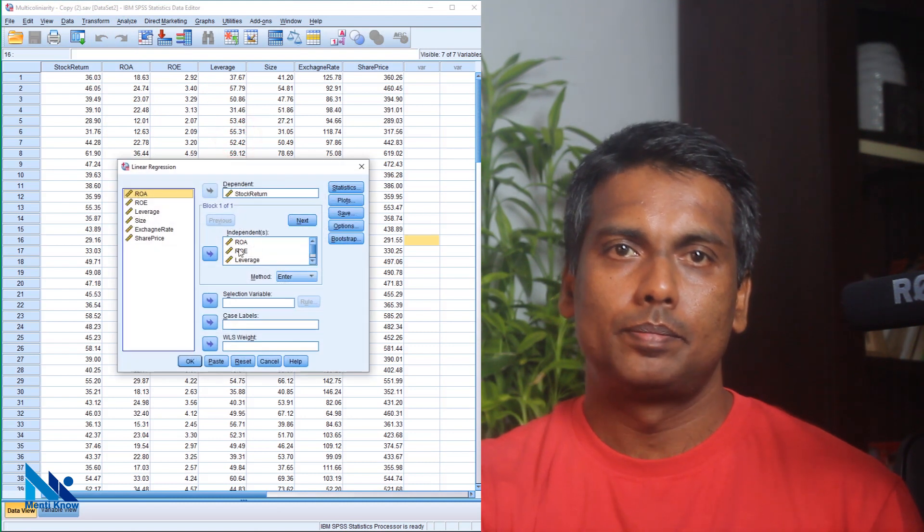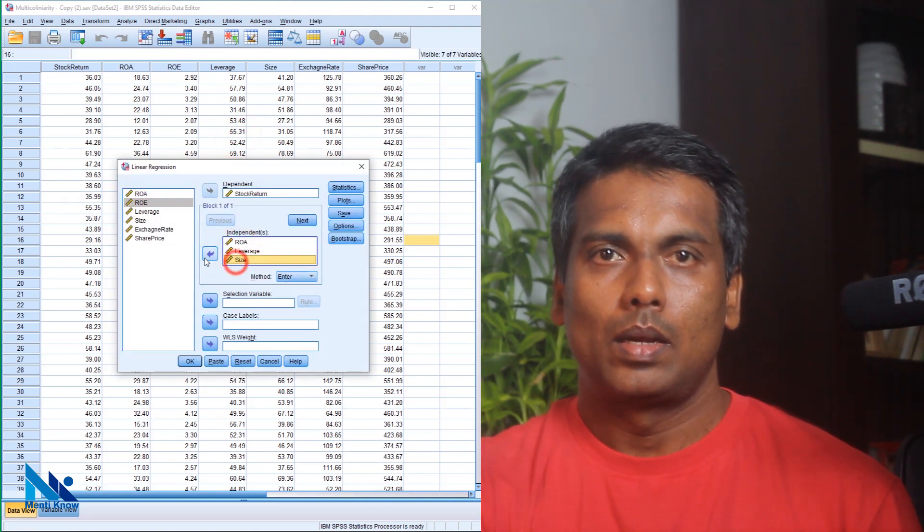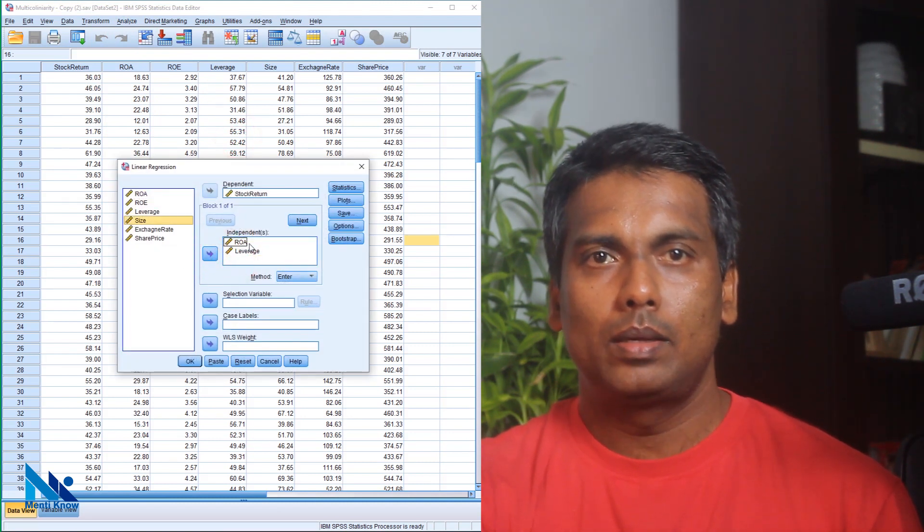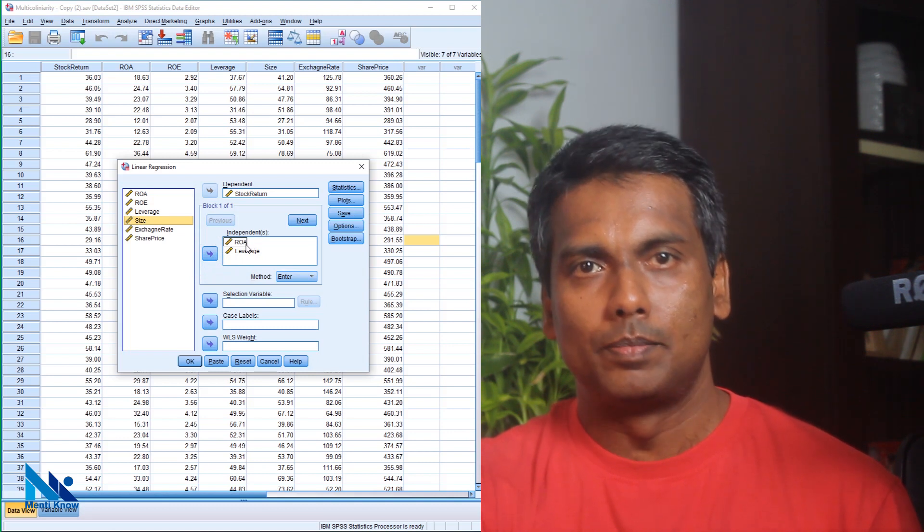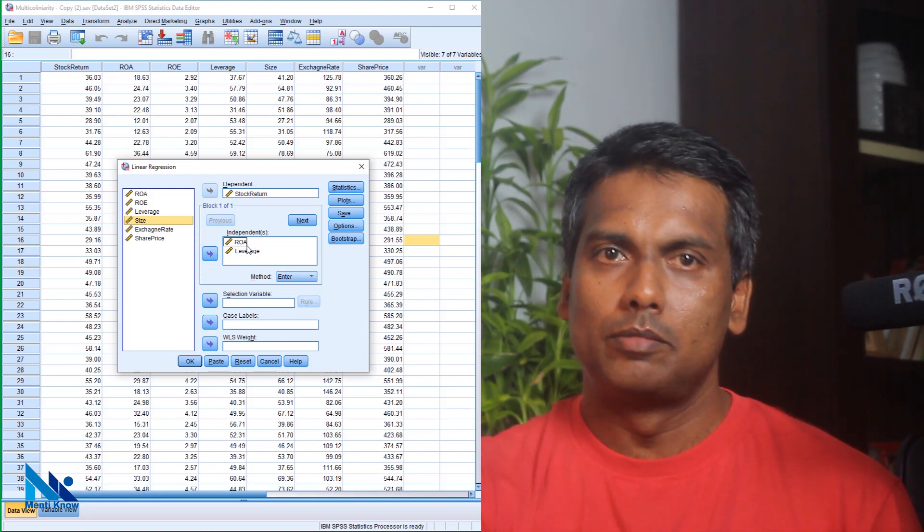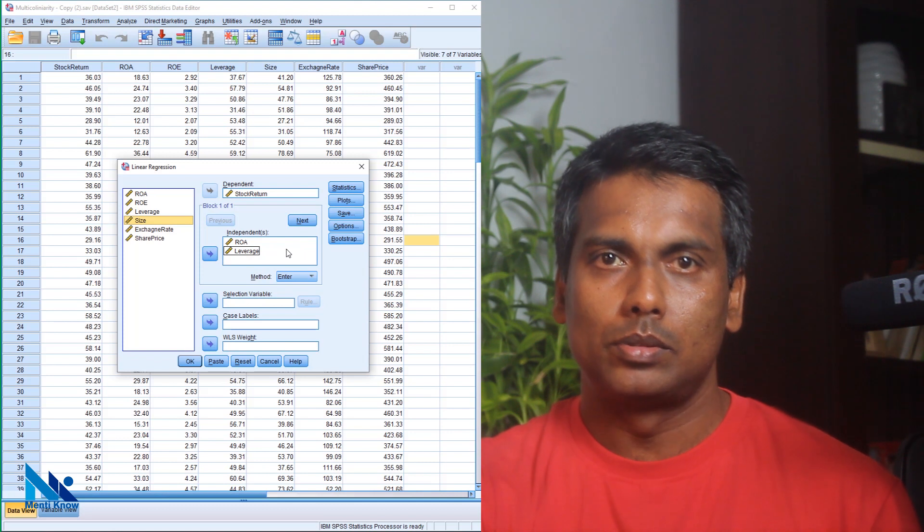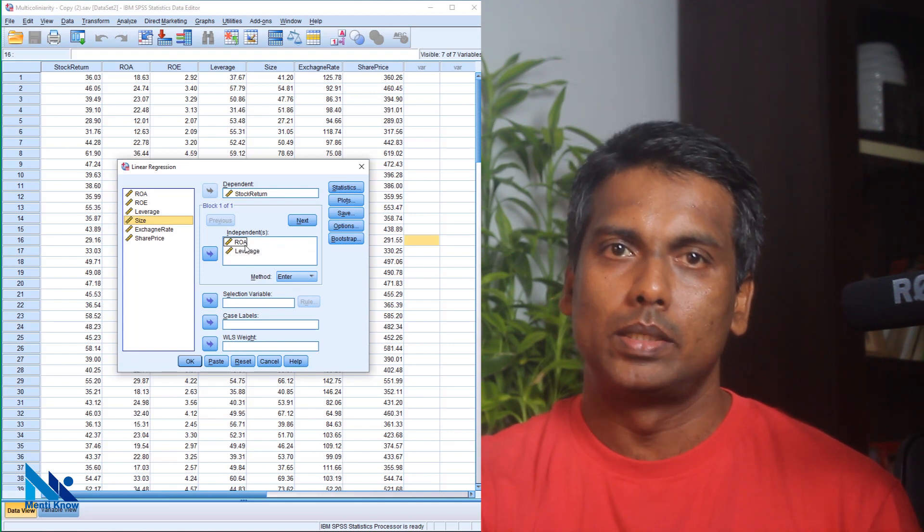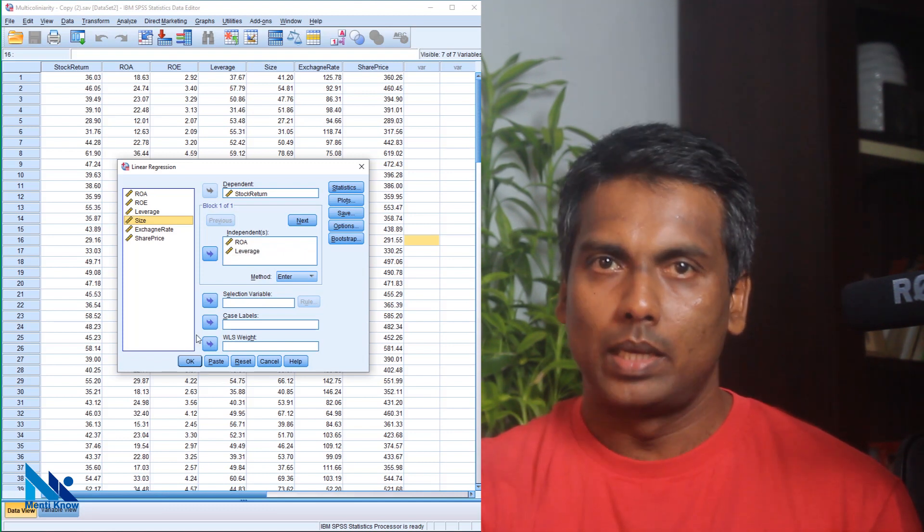And keep only ROA. I do not want to remove ROA because I think it is a good measure of firm performance and I am not seriously worried about removing ROE. Now among the three variables with high VIF values, I removed two so that I have only one in the regression model now. Then I click OK.